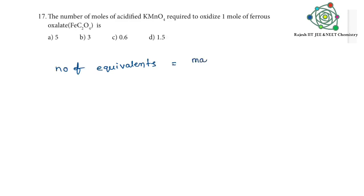Number of equivalents is equal to mass by gram equivalent weight or equivalent mass. So number of equivalents is equal to mass by gram equivalent mass, but equivalent mass or gram equivalent mass is equal to gram molecular mass divided by n-factor. So therefore mass by gram molecular mass we can write as number of moles.